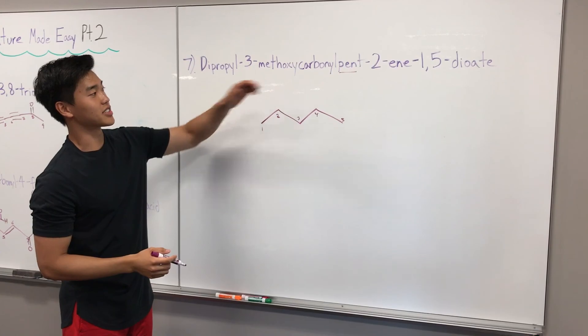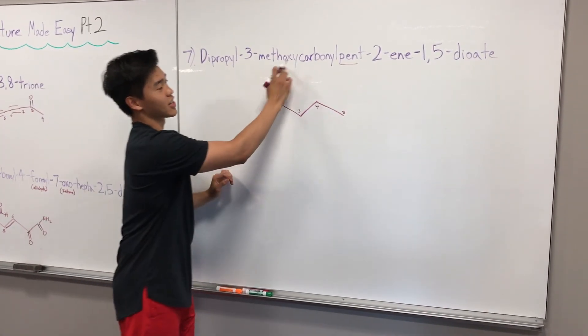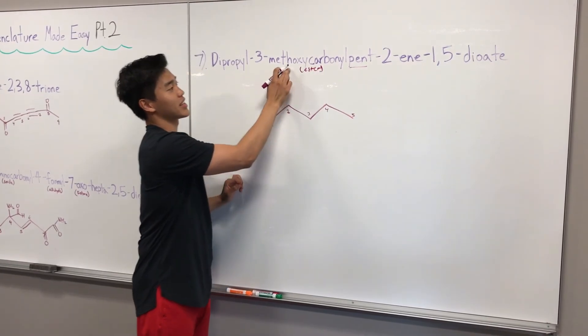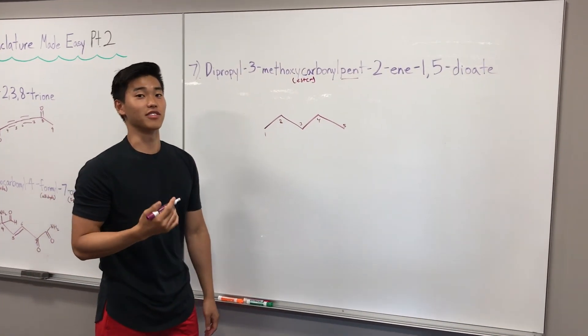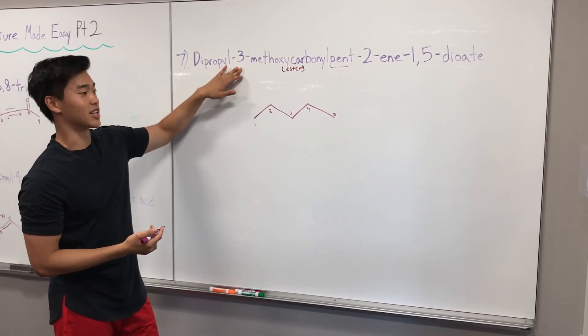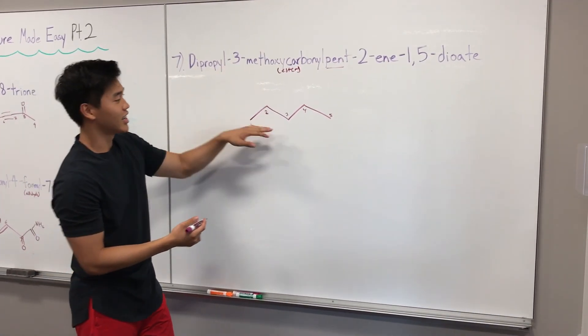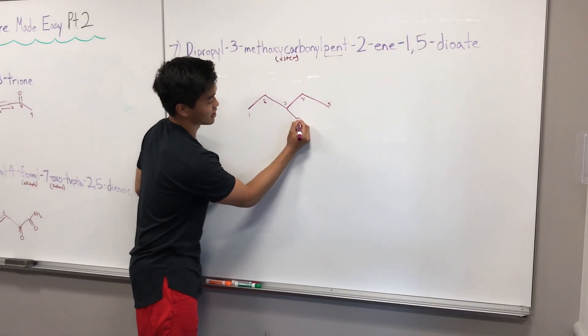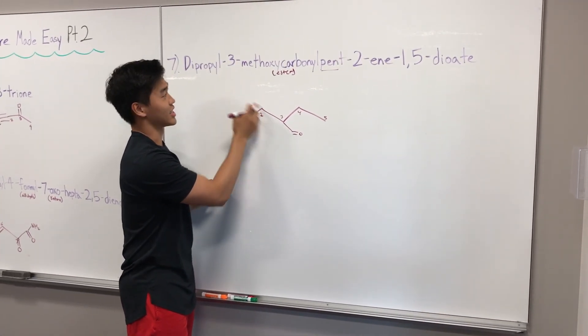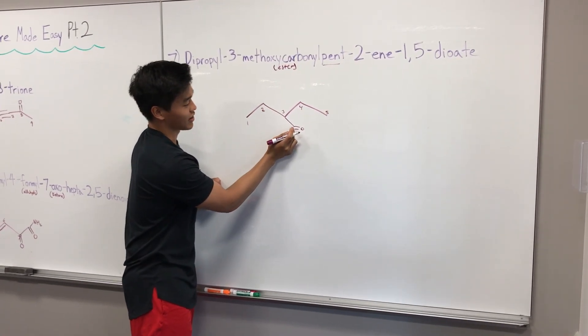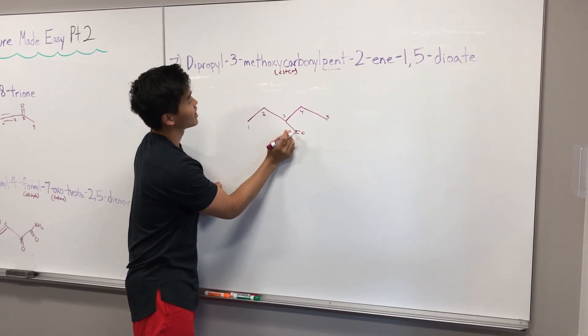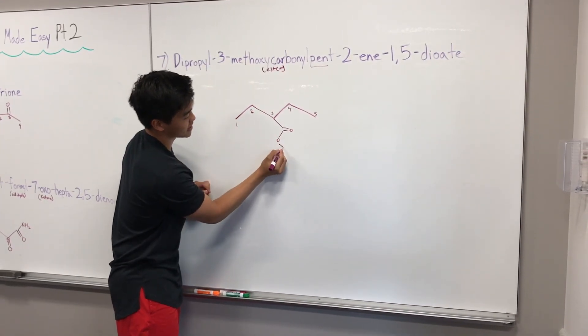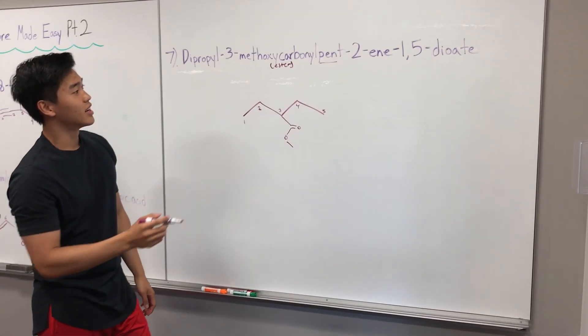I'm going to start right here at 3-methoxycarbonyl. Oxycarbonyl, we have an ester as a substituent. The meth is going to refer to the chain that is off of that ester. Three is going to represent where this is attached. So for three, we're going to draw a branch with our carbonyl. We draw the branch first because it is a substituent. Methoxy, we have our ester group and the meth branch, which is going to be one off.